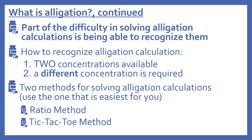Part of the difficulty in solving allegation calculations is being able to recognize them. To recognize an allegation calculation: number one, there will be two concentrations available — two different strengths will be specified that are available. And number two, a different concentration is required to be made from those two concentrations that you have.